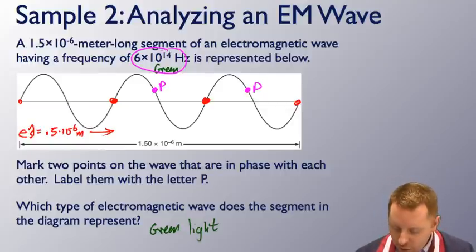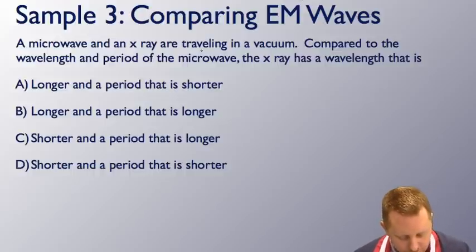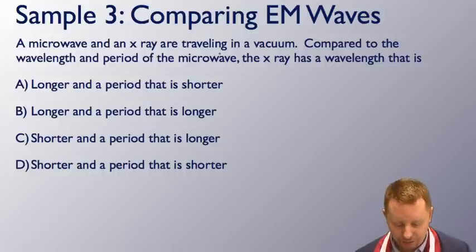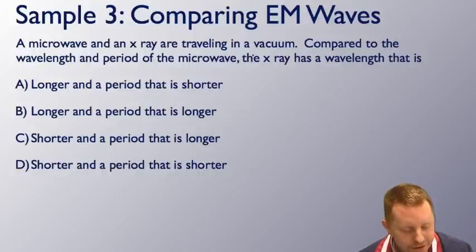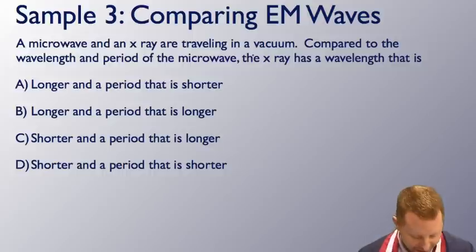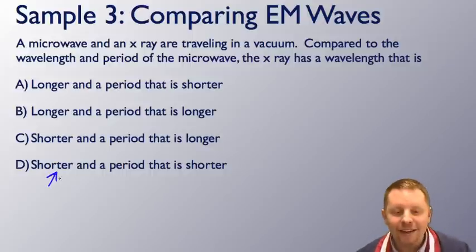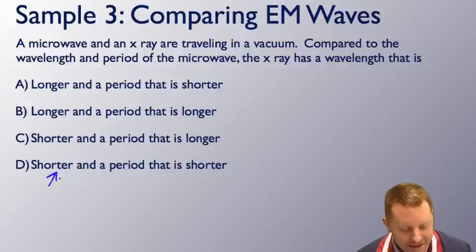Let's take a look at one more sample problem. A microwave and an x-ray are traveling in a vacuum. Compared to the wavelength and period of the microwave, the x-ray has a wavelength that is, well, let's use the electromagnetic spectrum chart and go ahead and pull one of those up. As you take a look, you know that it must have a wavelength that is shorter. The x-ray has a shorter wavelength that's on the left-hand side of that spectrum where you also have higher frequencies and a frequency that is higher.